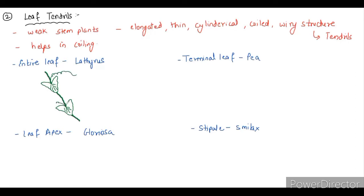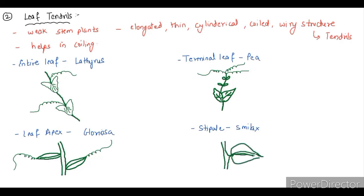Terminal leaf, if the end of the leaf, that is the terminal leaves, if they modify into tendril, the example is pea plant. Sometime not the entire leaf, not the terminal leaf, only the apex of the leaf modifies into tendril. The example is Gloriosa. And if the stipule gets modified into tendrils, then the example is Smilax.